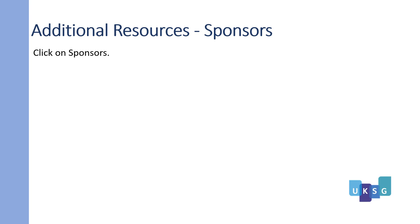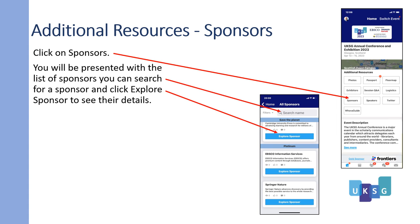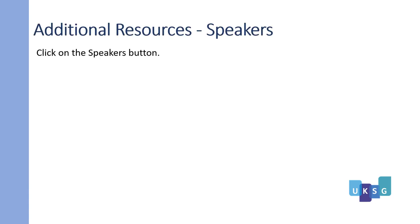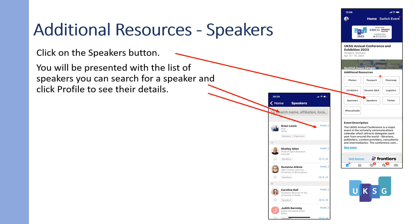Looking at sponsors — click on sponsors and you are presented with a list of sponsors. You can search for a sponsor and click 'explore sponsor' to see their details. Speakers — click on the speakers button and you are presented with a list of speakers where you can search for a speaker and click 'profile' to see their details.